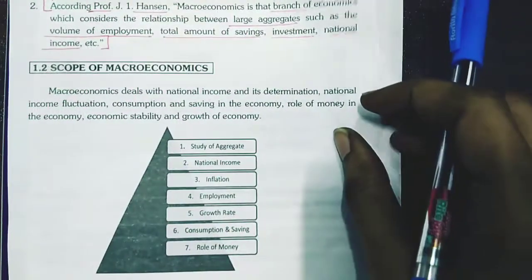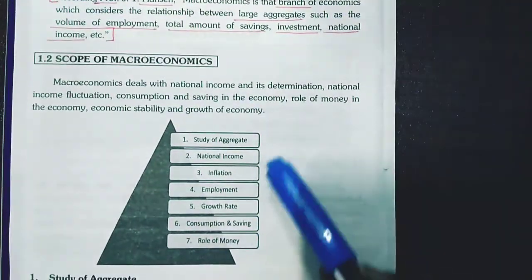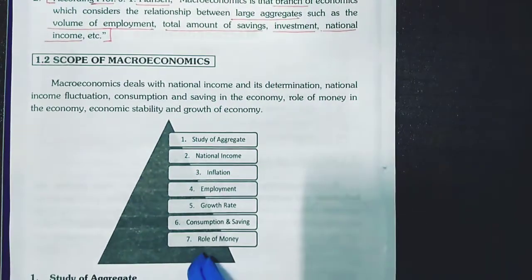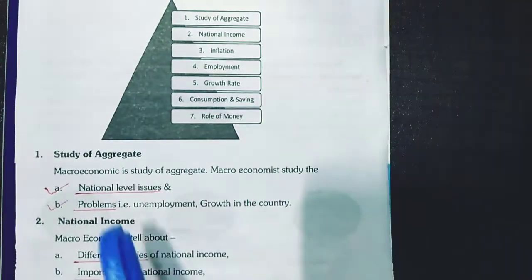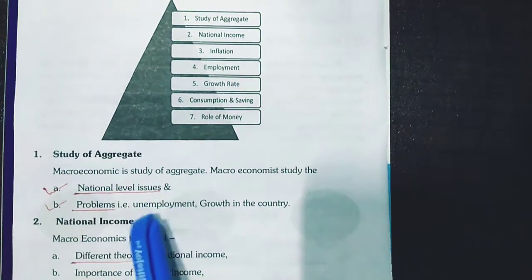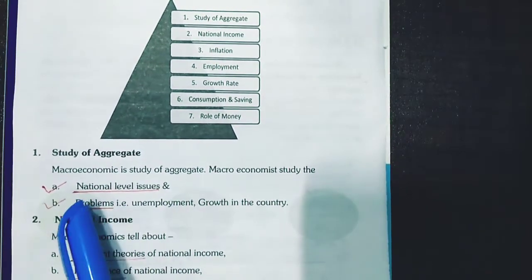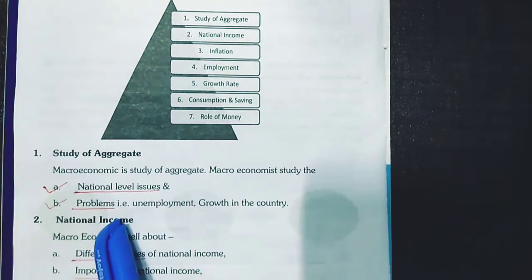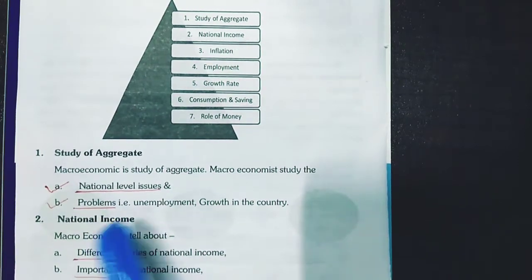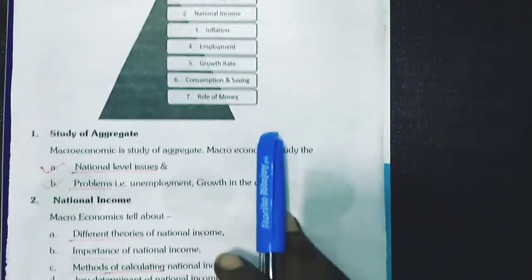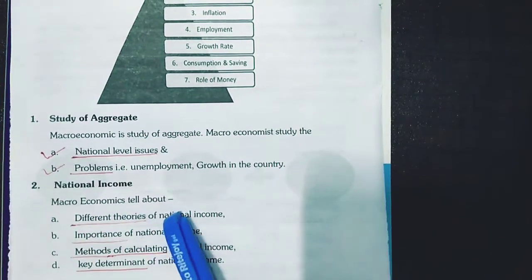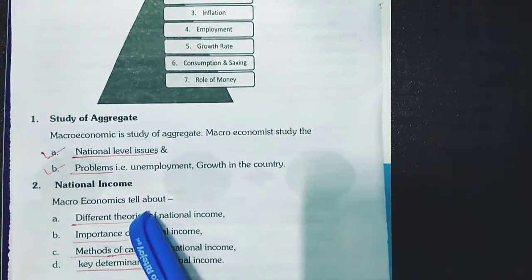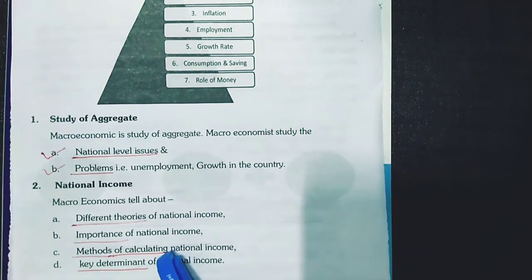We have to remember seven points for the scope of macroeconomics. The first is study of aggregate, because macroeconomics studies national level issues and problems. The second is national income — macroeconomics tells about the different theories, importance, methods of calculation and key determinants.